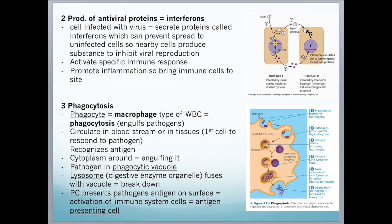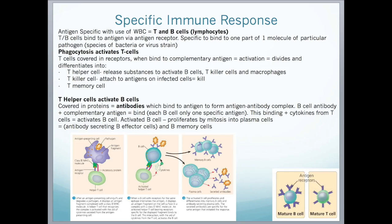The specific immune response is antigen-specific — it produces responses aimed at specific pathogens. It involves white blood cells called T and B cells. Phagocytosis activates T cells, which are covered in receptors. When they bind to a complementary antigen, they are activated, leading to division and differentiation into either a T helper cell, T killer cell, or T memory cell. T helper cells release substances that activate B cells, T cells, and other macrophages. T killer cells attach to antigens on infected cells and kill them.